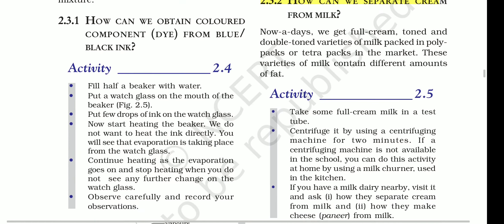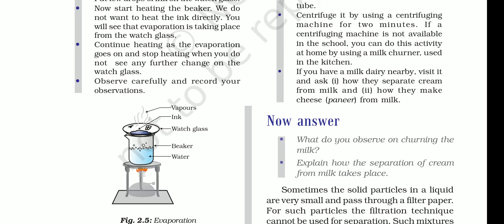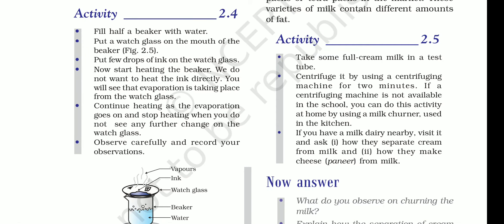For this activity, we have a tripod stand with a beaker and a watch glass on top. In the watch glass we place blue ink, and when we heat it, vapors are produced. The equipment required is: a beaker, a watch glass resting on the mouth of the beaker, a burner, water, blue ink, a tripod stand, and a wire gauze.